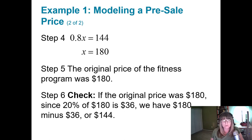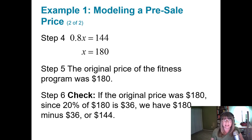We check by substituting back: $180 minus 0.2 times $180, which is $36 — so $180 minus $36 equals $144, which is the discounted price we were looking for. The answer checks out.